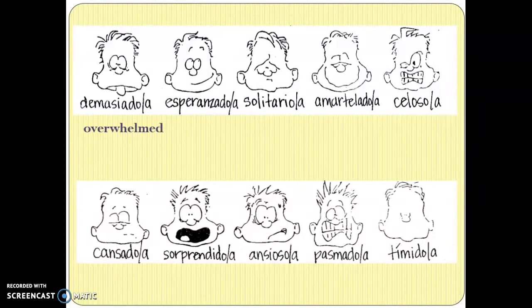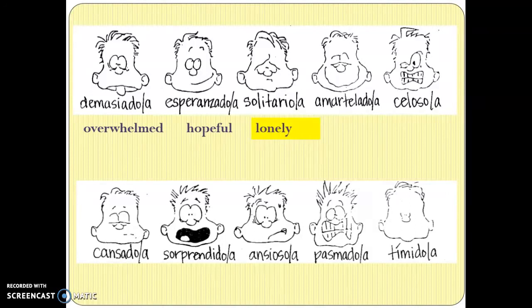'Demasiado' means overwhelmed — you don't need to know that one, so just define it on the page. 'Esperanzado' means hopeful — you don't have to know that one either. 'Solitario' looks like solitaire, and solitary means you're alone, so the feeling is that you're lonely. You need to know that one. 'Amartelado' — if you look at the first four letters, 'amar' means to love — so this is the feeling of being in love or lovestruck. You don't need to know that one. And 'celoso' means jealous, and you need to know that one.